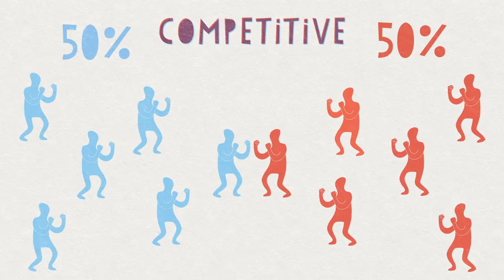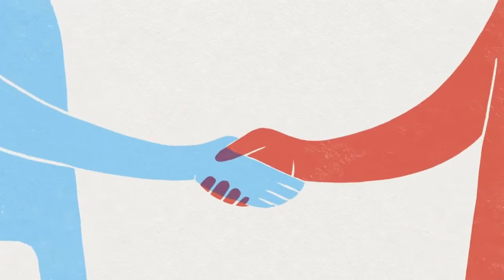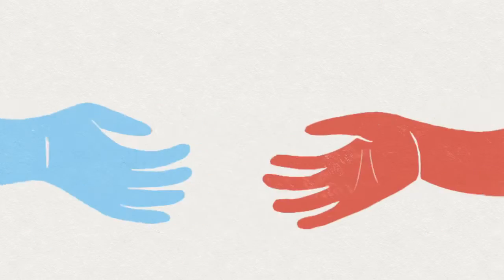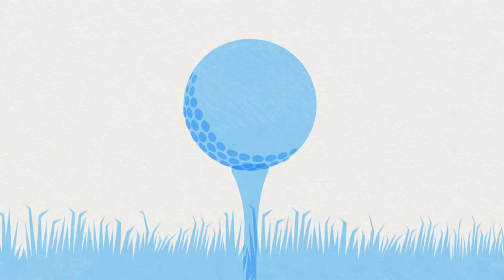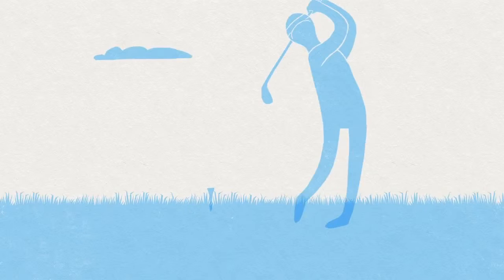But human evolution has been shaped by cooperation as well as competition, and cooperative pressure pushes handedness distribution in the opposite direction. In golf, where performance doesn't depend on the opponent, only 4% of top players are left-handed, an example of the wider phenomenon of tool sharing.